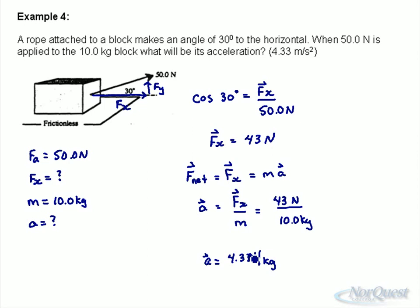So we have a slightly less acceleration, because only 43 newtons of the 50 is going to actually accelerate the block. The other 7 newtons is actually going to try to lift the block. But the block doesn't lift. It doesn't say it moves up at all. It says it moves along the horizontal in this case. So you find the component.